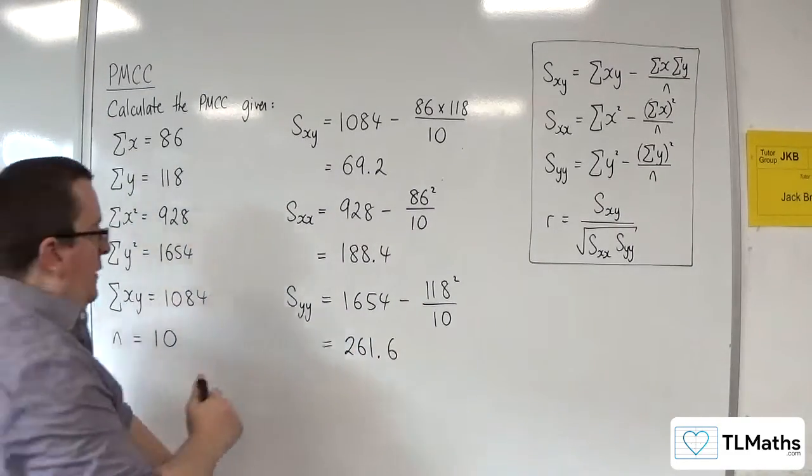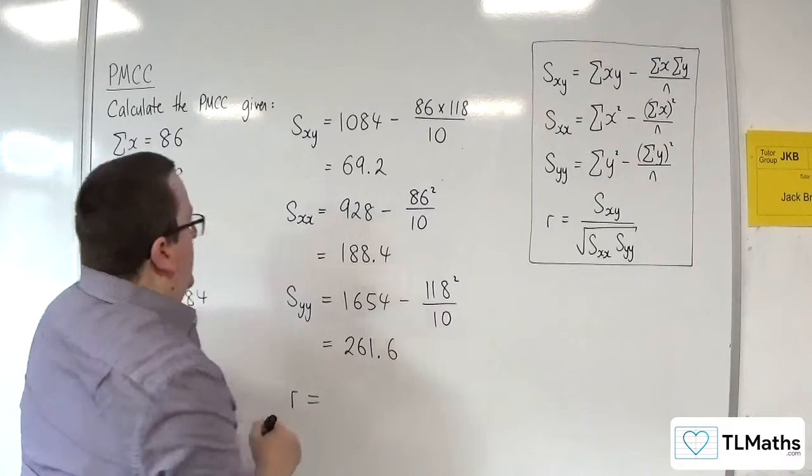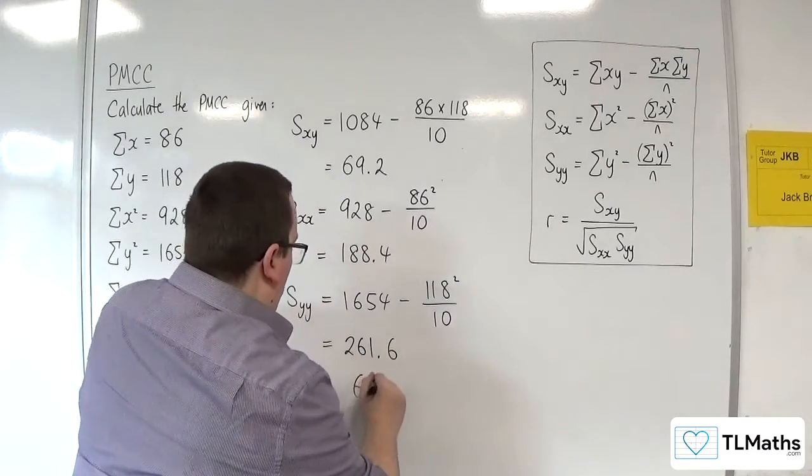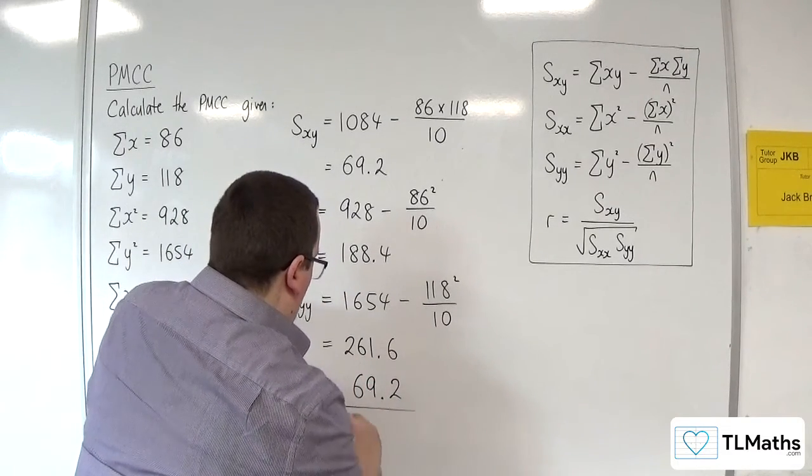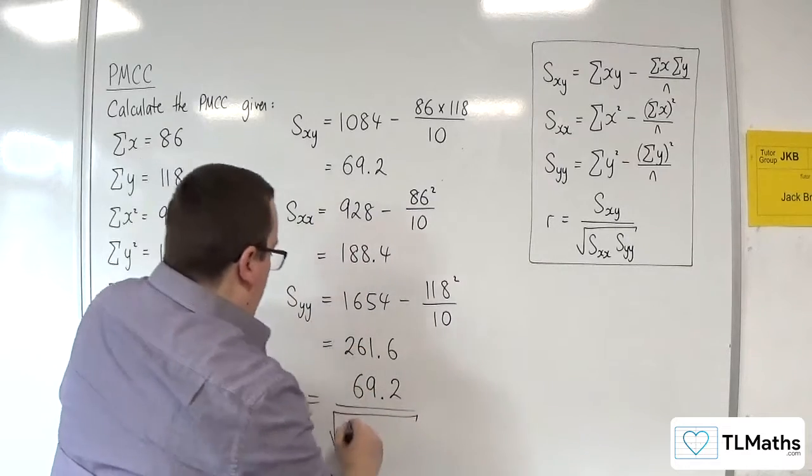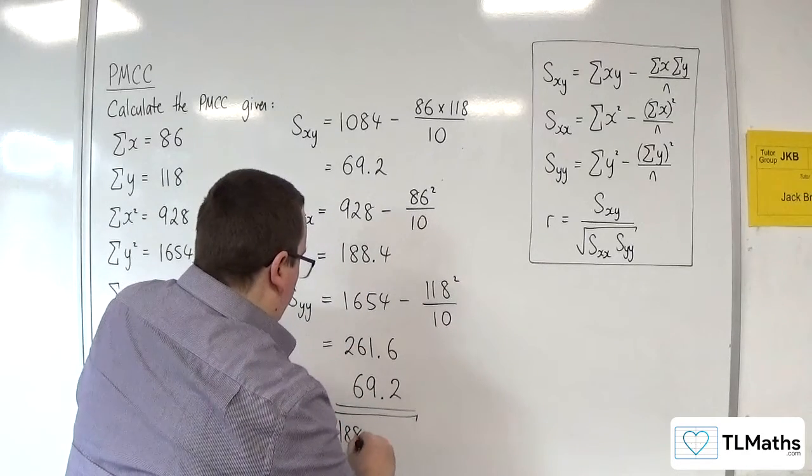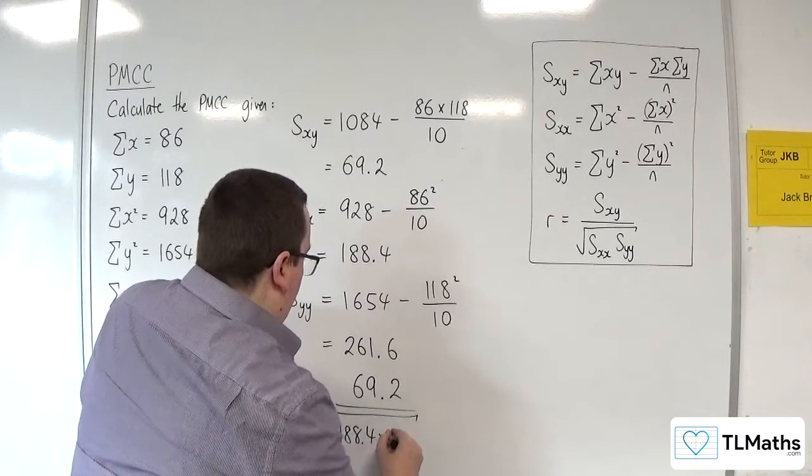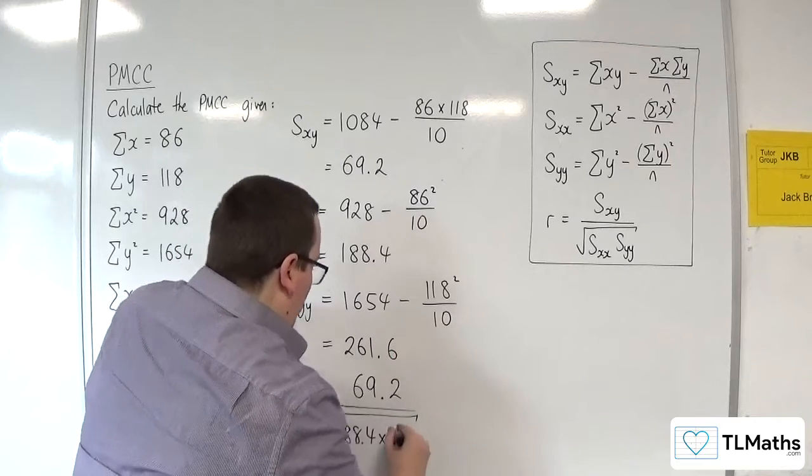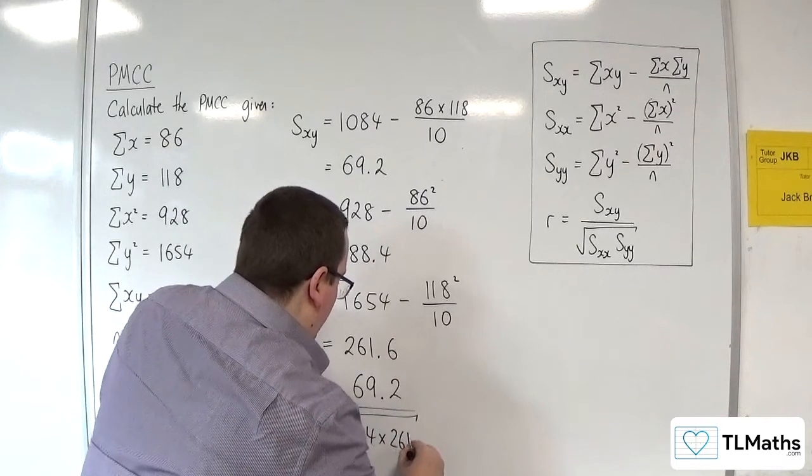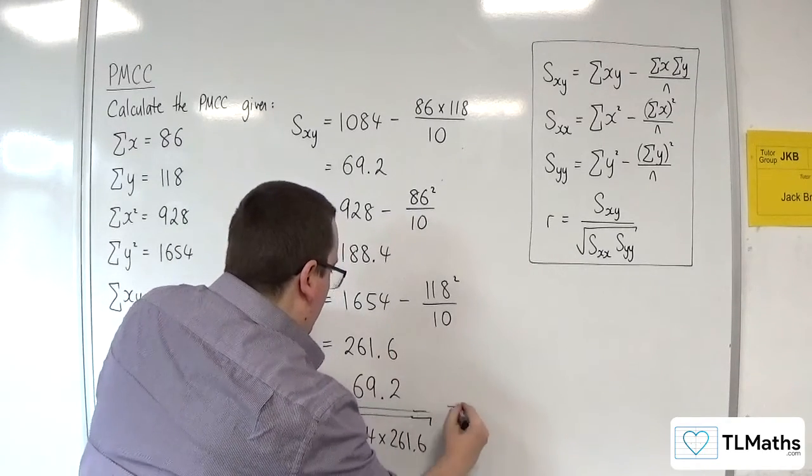Then we plug those into the formula. R is Sxy, 69.2, divided by the square root of 188.4 times 261.6.